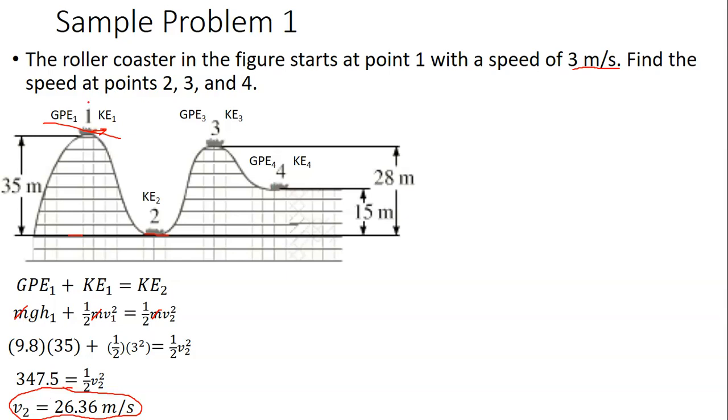Now we have a choice here for finding the speed at point 3, because we could say that point 1 is our initial scenario, or we could say that point 2 is our initial scenario, because both of these come before point 3. I personally like to be consistent and keep using point 1 as my initial scenario for all of the other points, but it's perfectly correct to solve it if you use point 2 as your initial scenario. What I'm going to do is set GPE₁ plus KE₁ equal to GPE₃ plus KE₃, and then plug in the formulas for those.